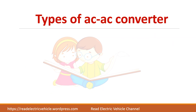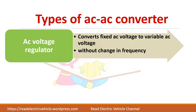There are two types of AC-AC converters. The first is called an AC voltage regulator. As the name suggests, it can control only the voltage — it converts a fixed AC voltage to a variable AC voltage. You cannot change the frequency, only the magnitude of the AC voltage.